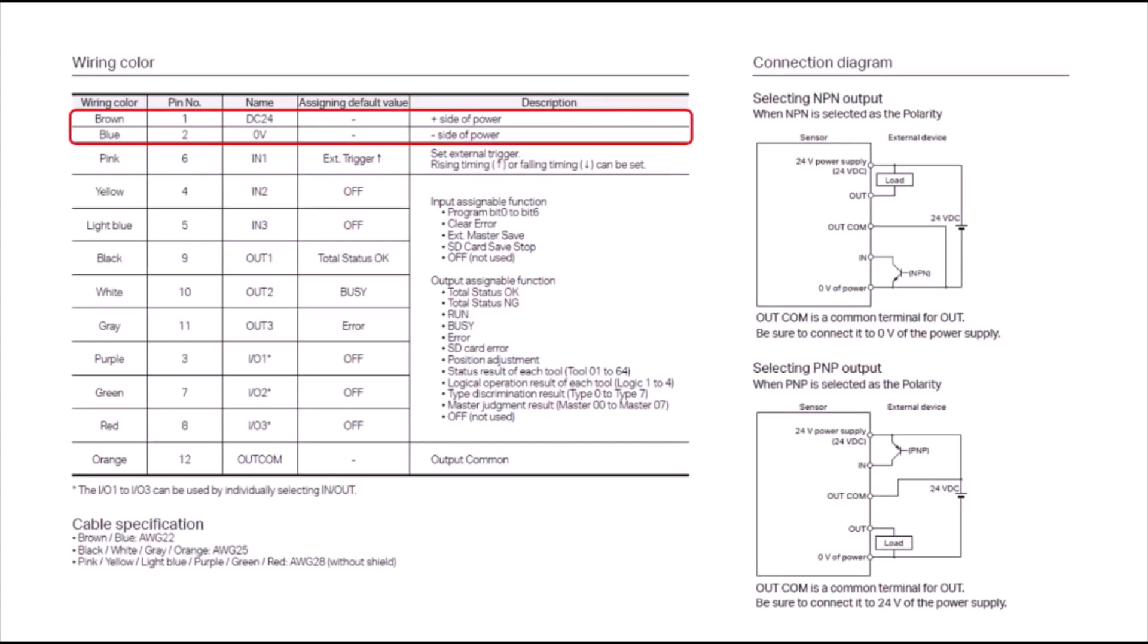You can find the I/O diagram in the IV-3 brochure or in the IV-3 user's manual. It'll show the assignment for each colored wire along with the connection diagram.